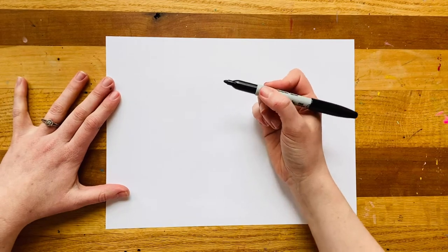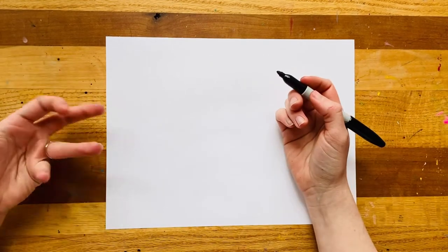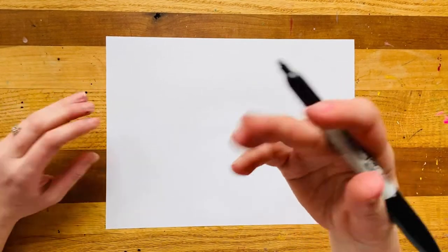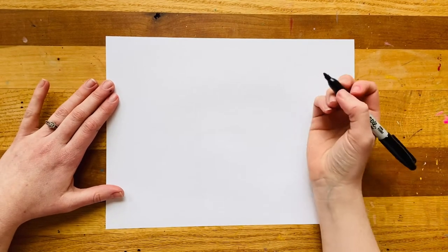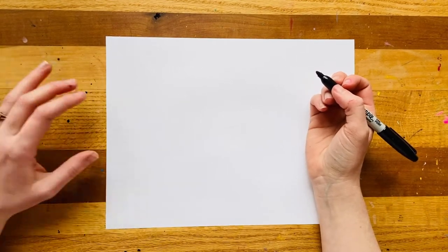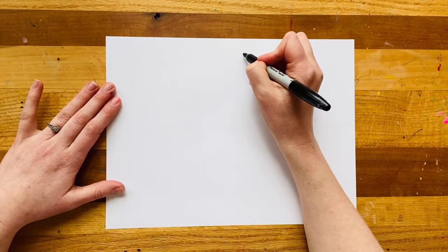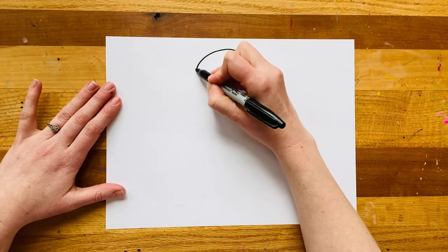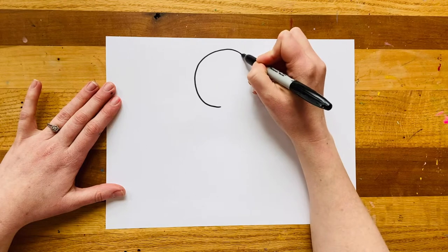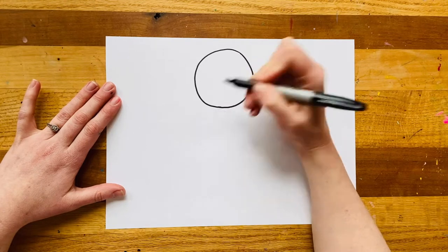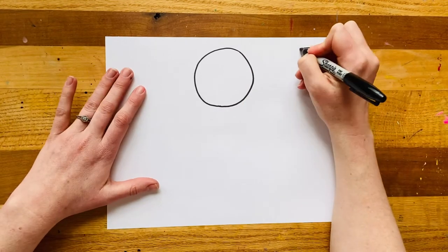I'll be using a sharpie today to start because I want you to be able to see it from far away on the camera, but you are welcome to start with a pencil and erase if you have anything you need to fix. So I'm going to start here in the middle on the top row and draw one of my circles for my emoji, come back around the other way and try to have it as neat as I can.